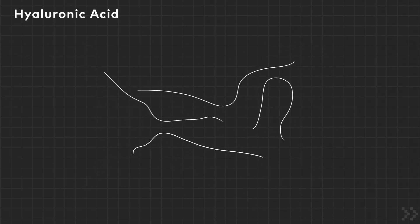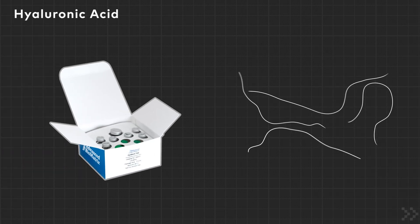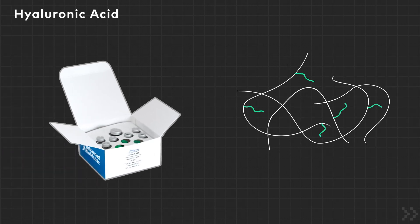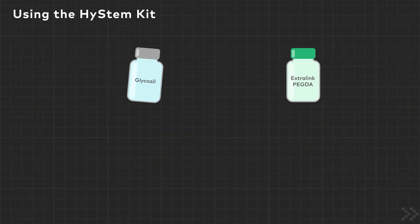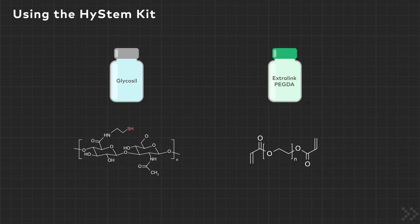Hystem from Advanced Biomatrix is an innovative product that provides a tunable 3D structure with similar molecular properties as native hyaluronic acid. The Hystem hydrogel kit consists of two major components: a thiolated hyaluronic acid known as Glycosyl, and a polyethylene glycol diacrylate crosslinking agent called Extralink.